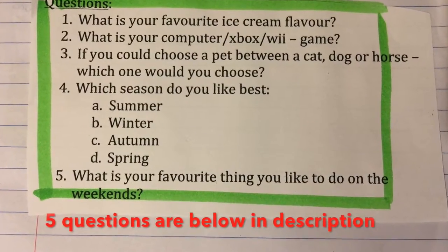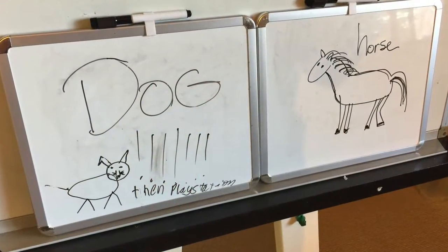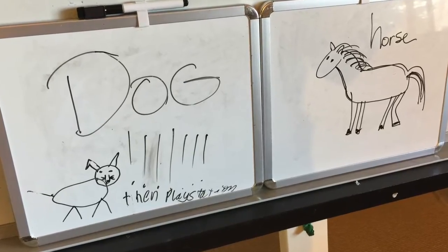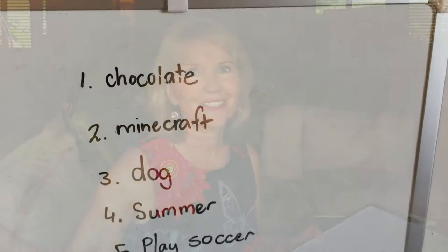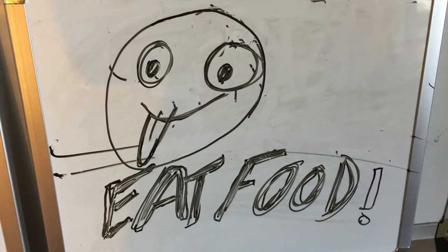I'd ask questions like what is your favorite flavor of ice cream, or if you had to choose a pet between a dog, a cat, or a horse, which one would you choose? They write their answers, then reveal them one at a time and we ask questions about it. I'd also ask the class who else likes chocolate, so it brings the whole class in — it's a spectator game but also includes a larger audience.